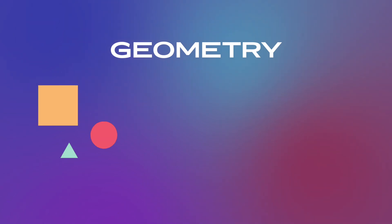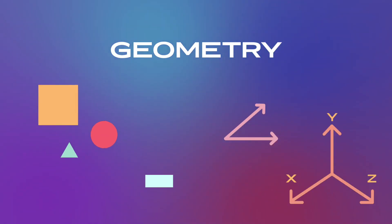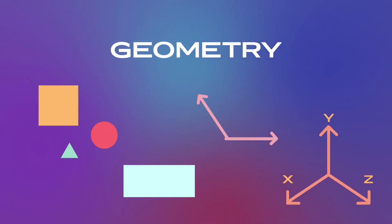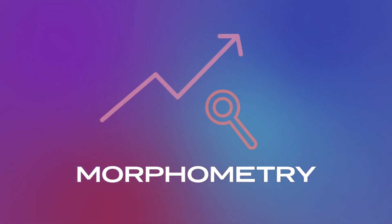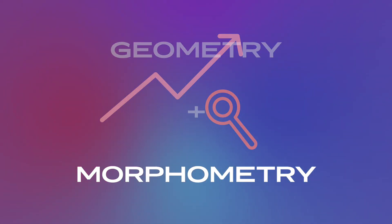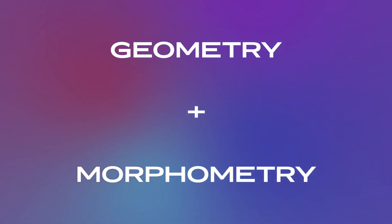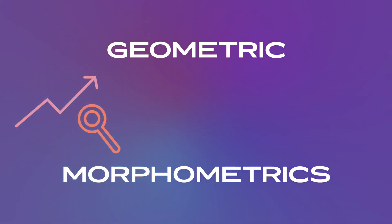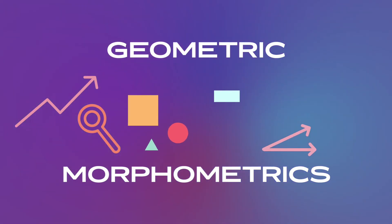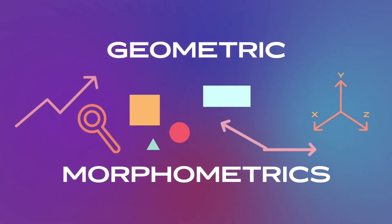Geometry refers to shapes, sizes, position angles, and dimensions. Meanwhile, morphometry refers to the quantitative analysis of a size or shape. Combining these two terms, we get geometric morphometrics: the quantitative analysis of shapes, sizes, position angles, and dimensions.